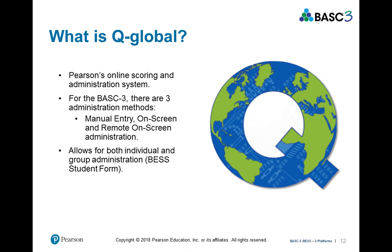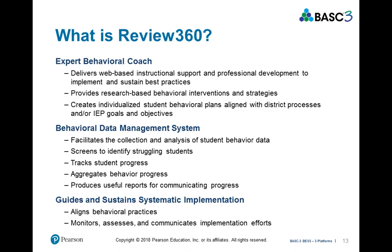In this next section I'm going to give a quick introduction to the platforms. First, what is Q-Global? Q-Global is Pearson's online scoring and administration system. For the BASC-3, there are three administration methods: manual on-screen administration and remote on-screen administration. The remote on-screen administration allows you to email a teacher or parent a secure link that they can access and fill out the form. The Q-Global platform allows for both individual and group administration.